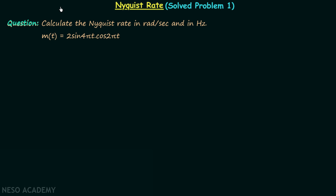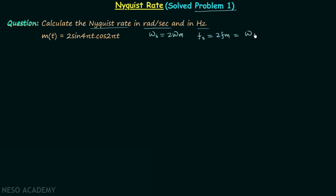In the last lecture we saw the properties of Nyquist rate, and now we will solve some problems using those properties. In this lecture we will solve problem number 1, where we need to calculate the Nyquist rate in radians per second (ωs = 2ωm) and in hertz (fs = 2fm, or fs = ωs / 2π). We will focus on calculating ωs first, then derive fs from it.